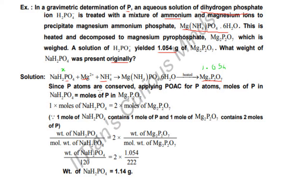POAC means the atoms always get conserved. Since P atoms are conserved, applying POAC for P atoms: moles of P in NaH2PO4 equals moles of P in Mg2P2O7. So 1 × moles of NaH2PO4 equals 2 × moles of Mg2P2O7.